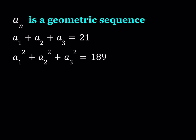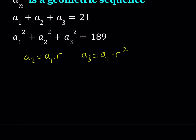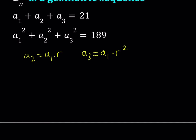Since this is a geometric sequence, we can write a_2 and a_3 in terms of the first term. So a_2 can be written as a_1 times r, and a_3 can be written as a_1 times r squared. Making those replacements, the first equation becomes a_1 plus a_1·r plus a_1·r² equals 21.